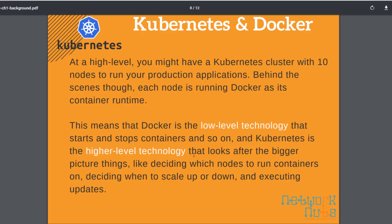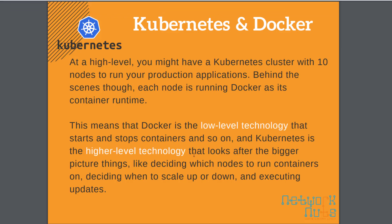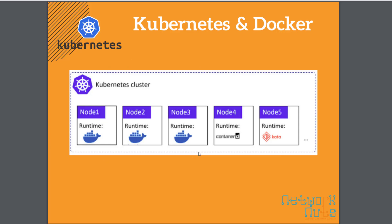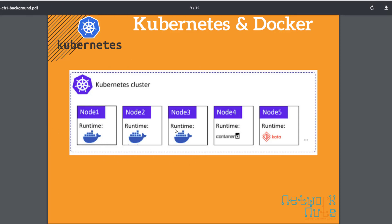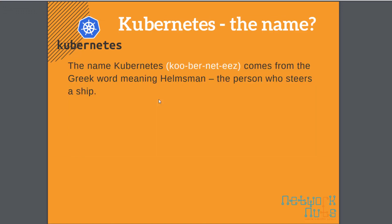Kubernetes is the high-level technology that controls everything; the actual work is done by Docker. Docker is the low-level technology. I have multiple machines, every machine runs Docker, and the whole cluster of 10, 15, or 20 nodes is managed by the Kubernetes cluster. The word Kubernetes is a Greek word meaning helmsman — the person who steers the ship. Think of Jack Sparrow as a Kubernetes: he controls where the ship is going and what strategy to take.